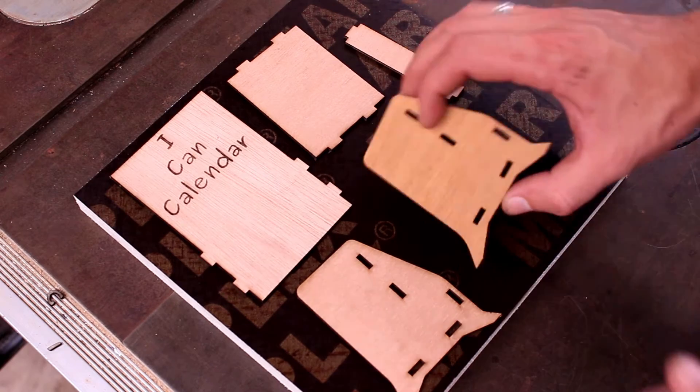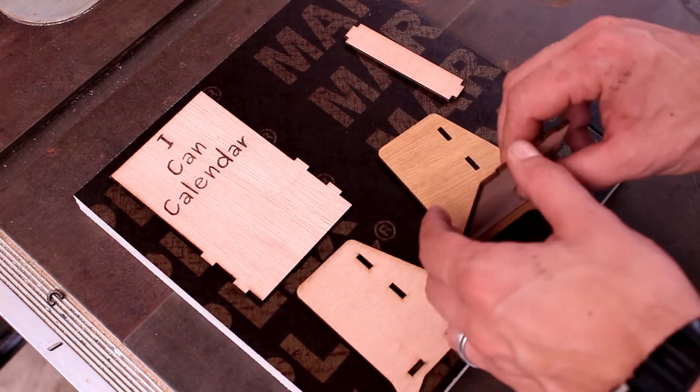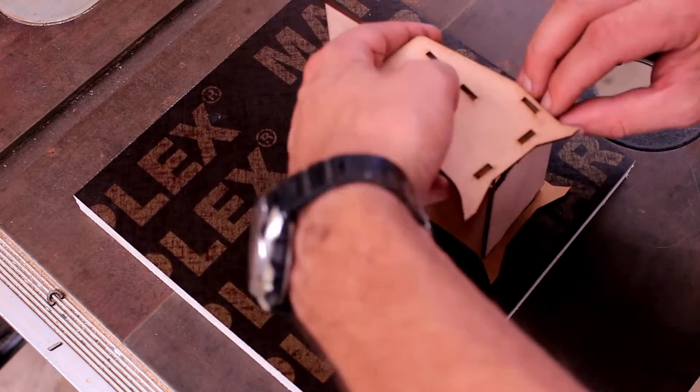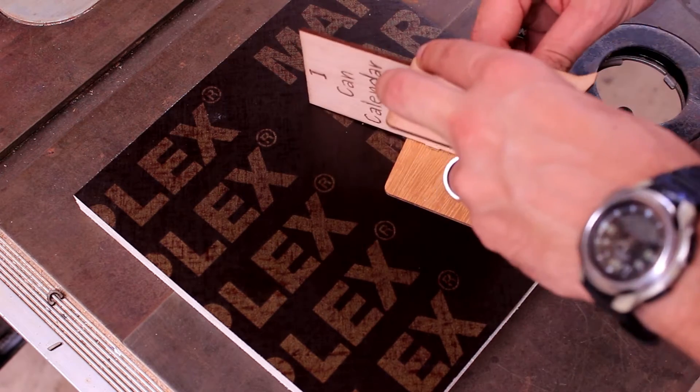Now it's time for the assembly. I start by laying out the pieces on a flat surface. I insert the bottom and the small piece into the sides first. Then I slot the main iCAN calendar board into place and place the other piece on top.